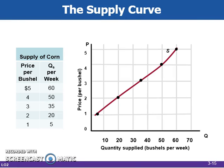To create a supply curve, we follow the same rules for graphing that we did with the demand curve. Because price and quantity supplied are directly related, the supply curve graphs as an upsloping curve. Other things equal, producers will offer more of a product for sale as its prices rise and less of the product for sale as its prices fall.